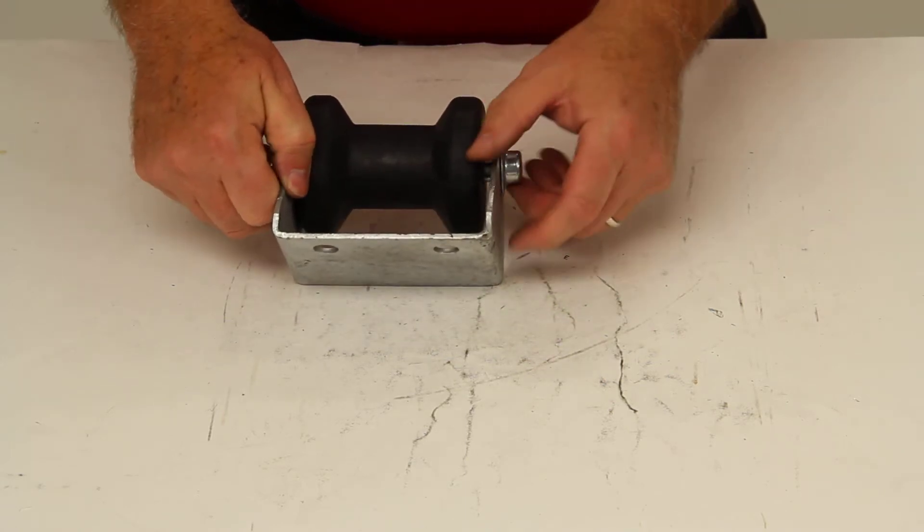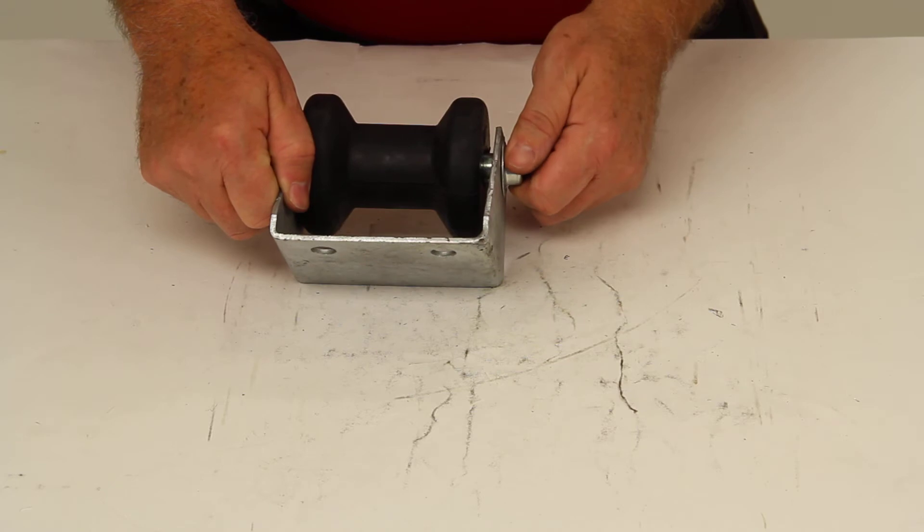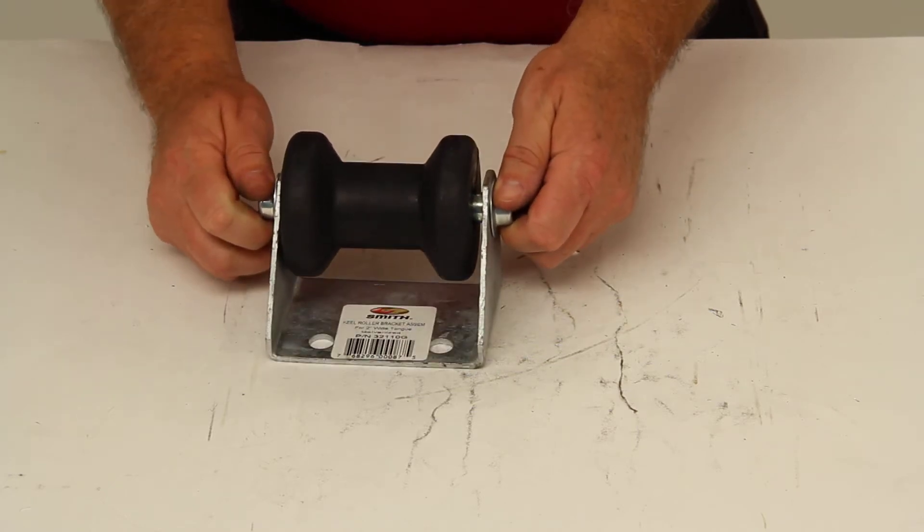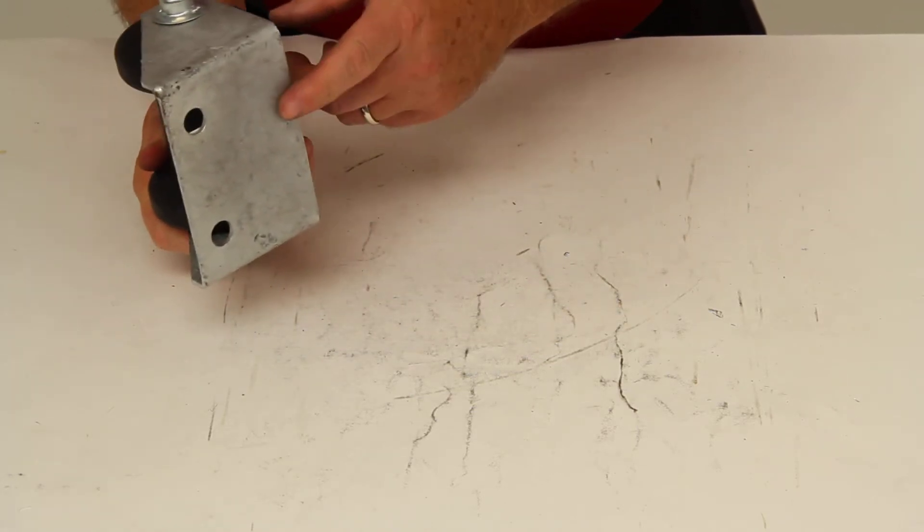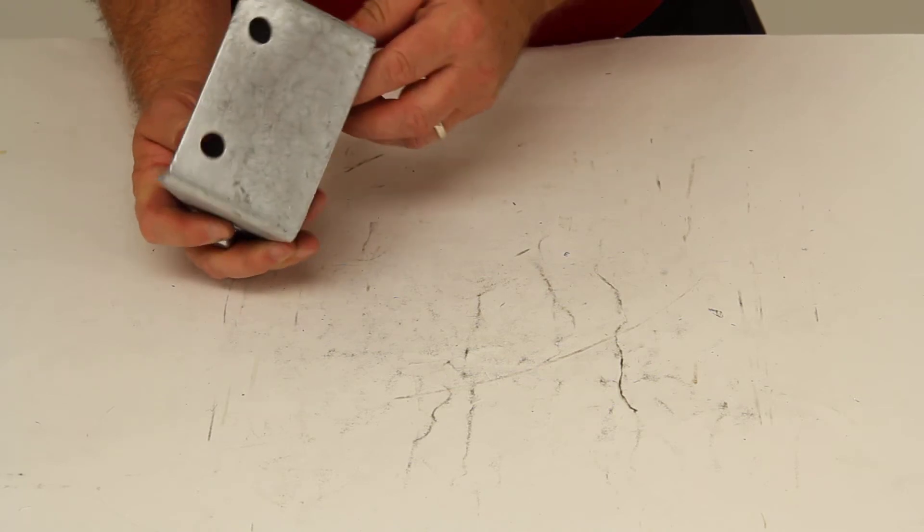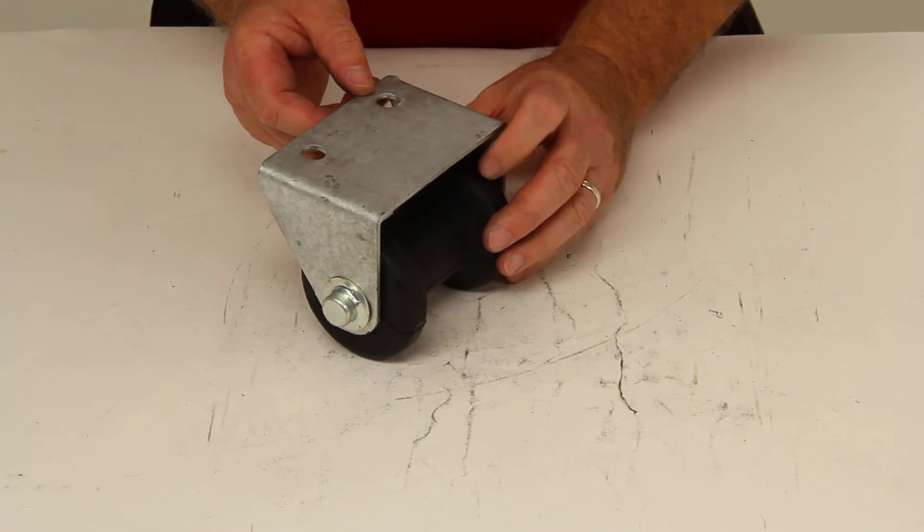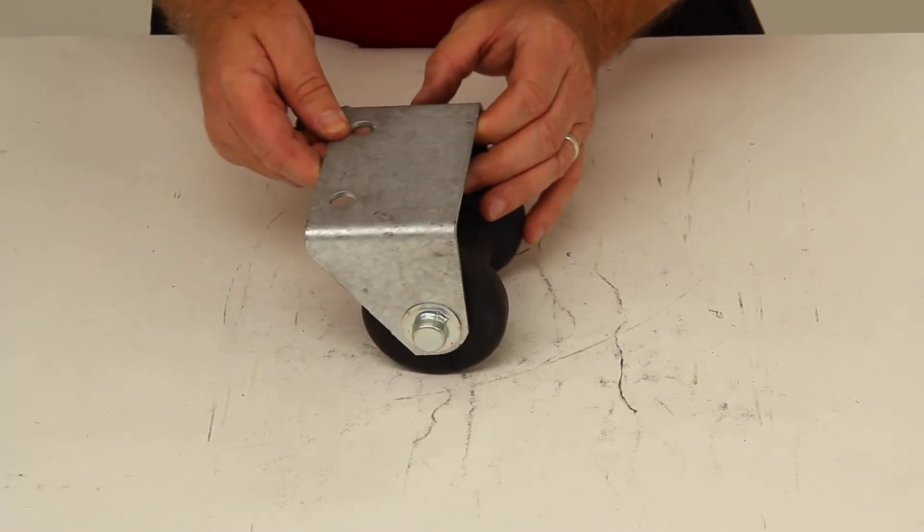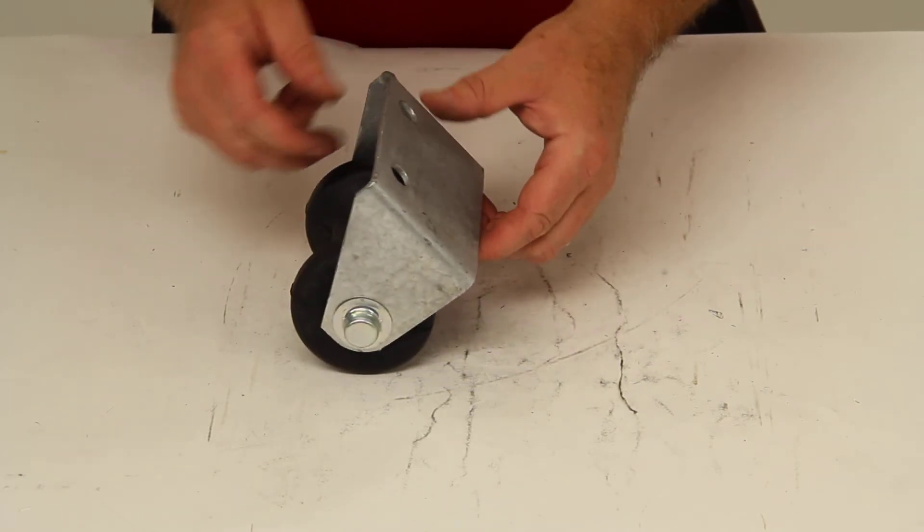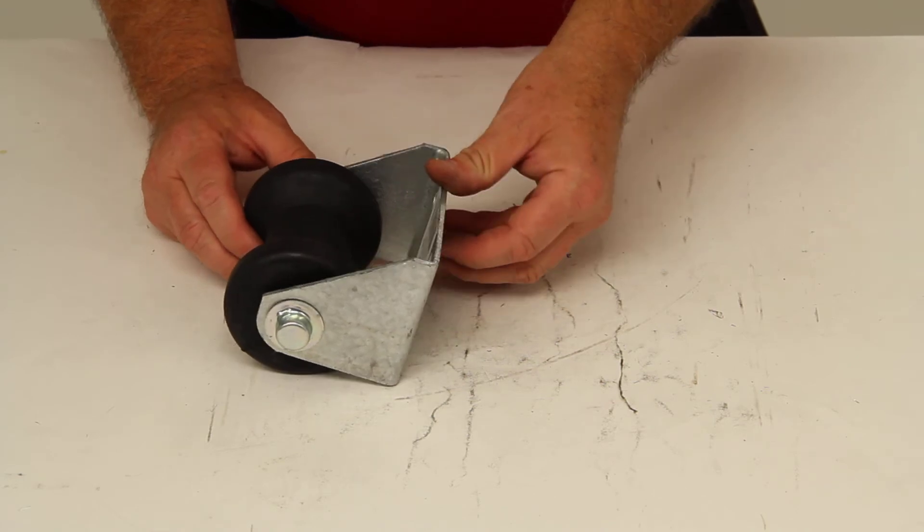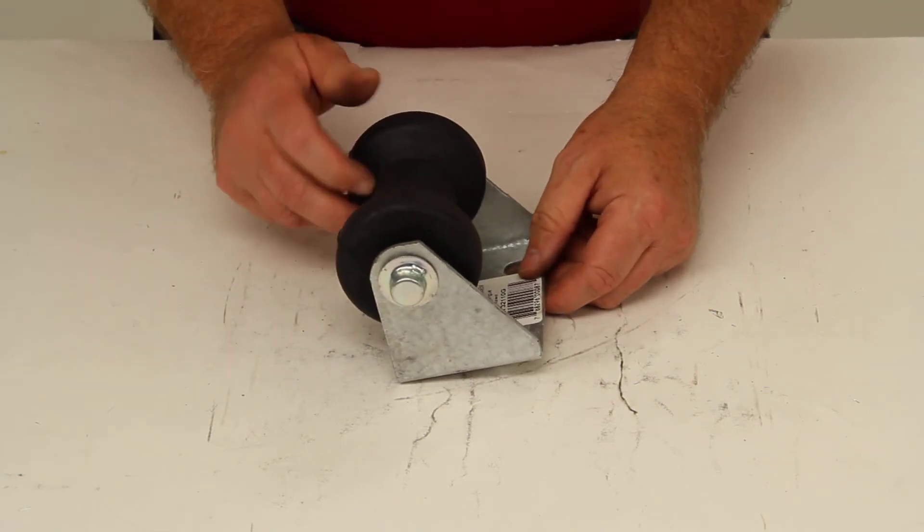This sturdy 1/8 inch galvanized steel bracket will resist corrosion. The galvanized steel parts are hot-dipped in zinc after being stamped, and this will create a coating that is typically 3 millimeters to 5 millimeters thick. This thick all-around coating will allow the galvanized pieces to provide years of use without rusting or corroding.